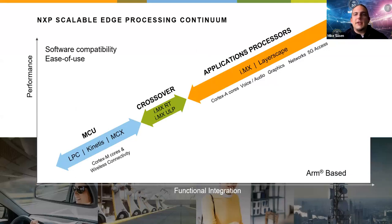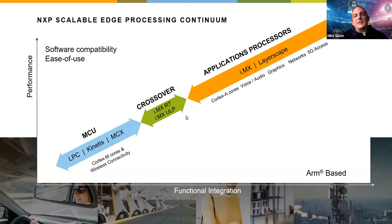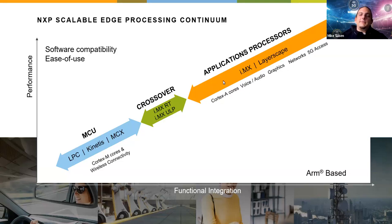Here is our portfolio, divided into three groups: MCUs, crossovers, and application processors. In MCUs we have LPC, Kinetis, and MCX — a new family with sub-families like MCX A, L, and W for wireless. These MCUs are mainly used in appliances. Moving up in performance and functional integration, we use crossovers — the i.MX RT — and part of the i.MX ULP family.